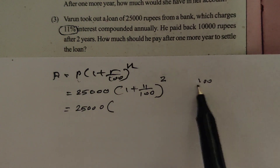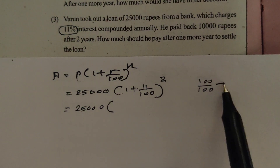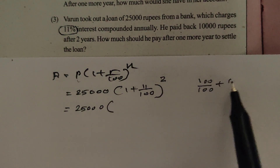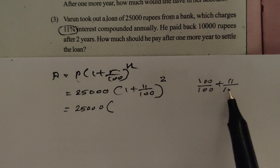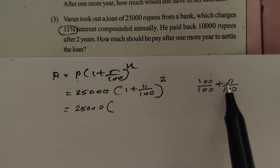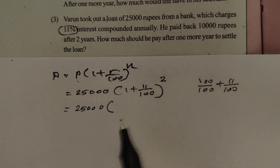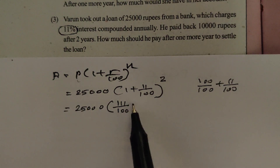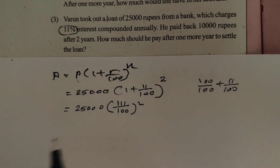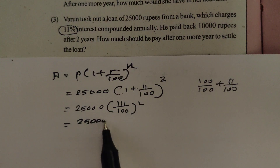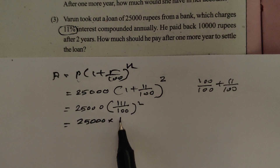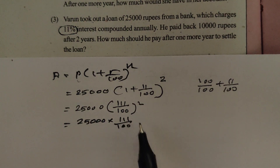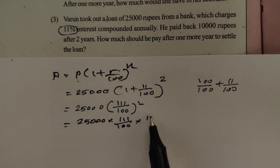Since 1 equals 100 by 100, adding 11 by 100 gives 111 by 100. So the expression becomes 25,000 × (111/100)^2, which equals 25,000 × 111 by 100 × 111 by 100.